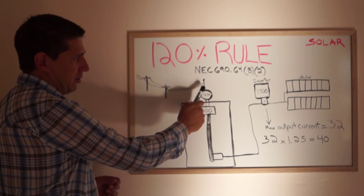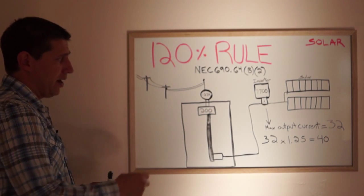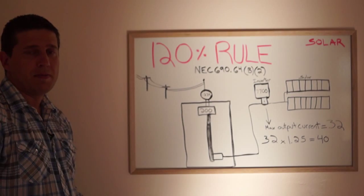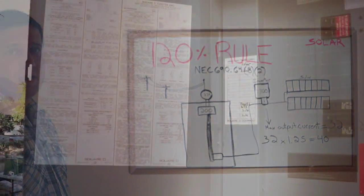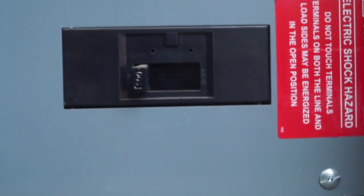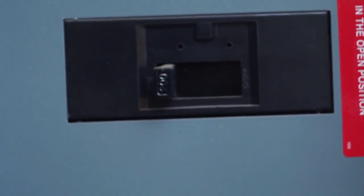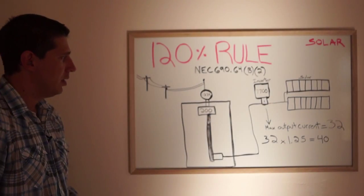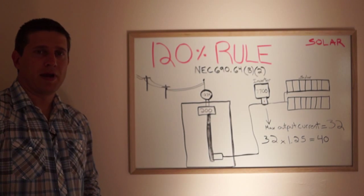After the wires go through the meter, the wires then go to your 200 amp main service disconnect. Some homes have 100 amp, 125, and some might have 400 or more depending on the size of the home. This is a 200 amp main breaker.